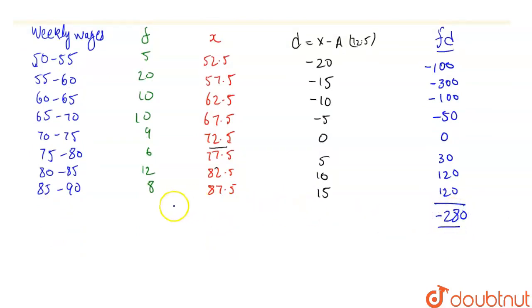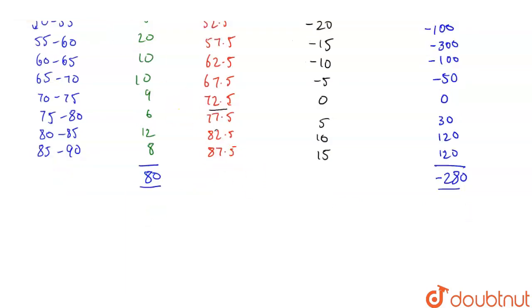So now we'll find the mean by shortcut method. Mean equals a plus summation fi di upon summation fi. So this becomes a here, what we have chosen, that was 72.5 plus summation fi di is minus 280 divided by summation fi is 80. So this gives us, if we cancel out this, this becomes 72.5 minus 3.5.